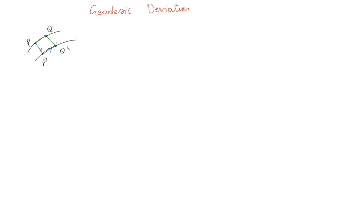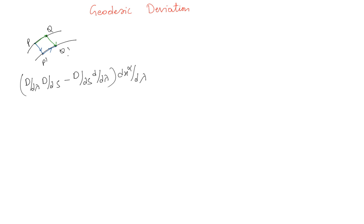We are interested in the quantity: d/dλ (d/ds) minus d/ds (d/dλ) of dx^α/dλ. I'm using d for the covariant derivative so I don't have to write the whole thing — that's a standard way of writing the covariant derivative.